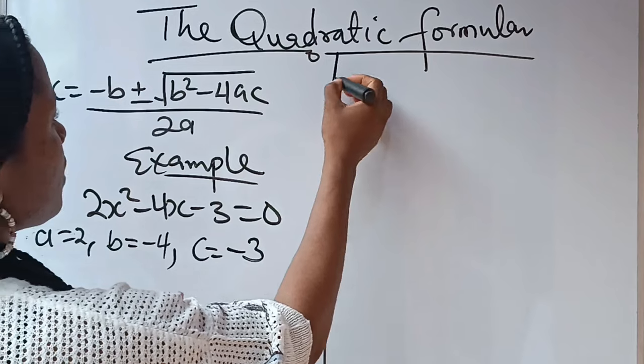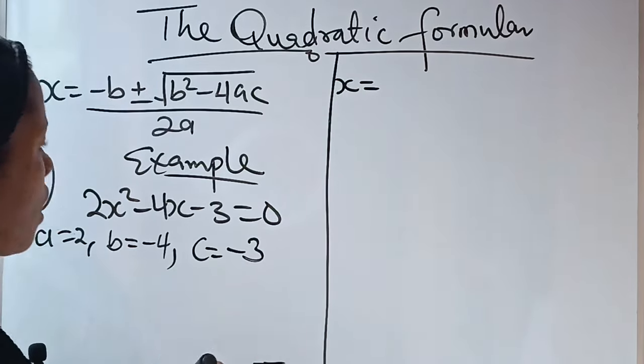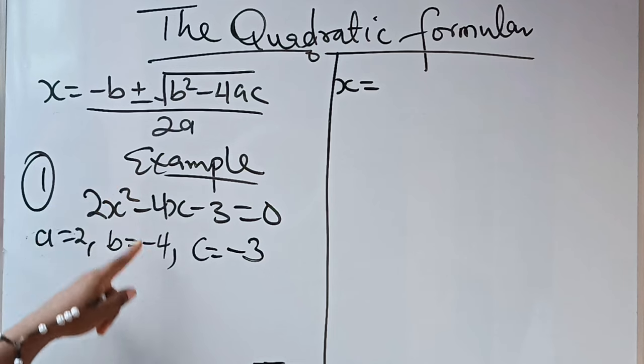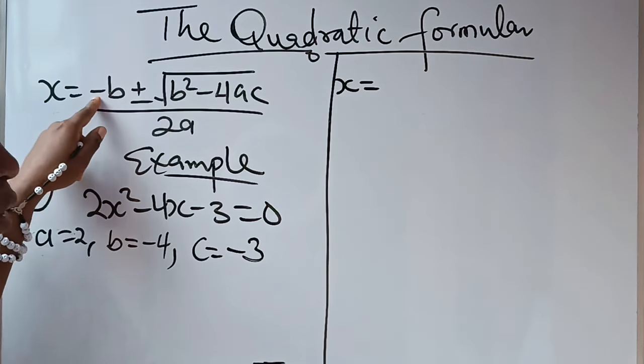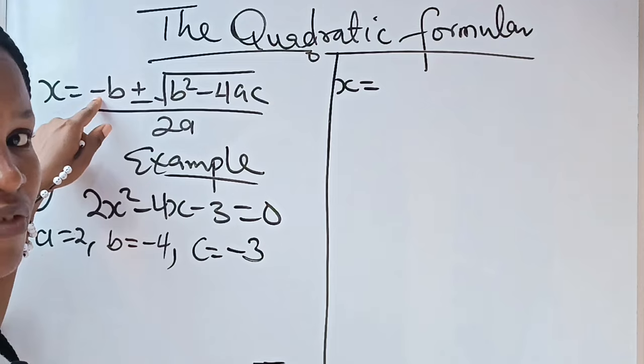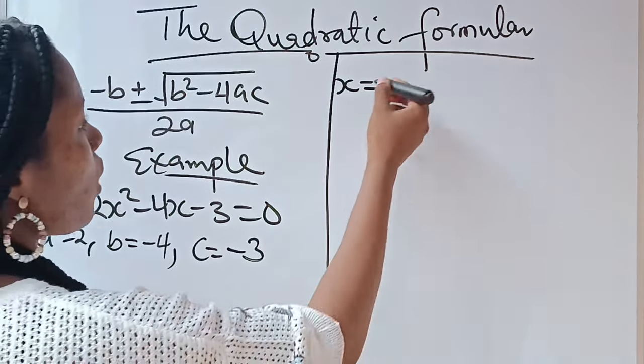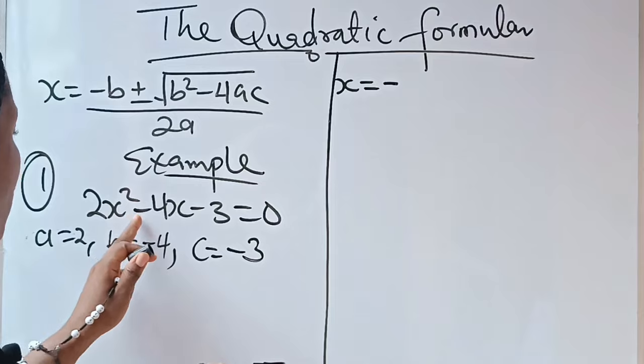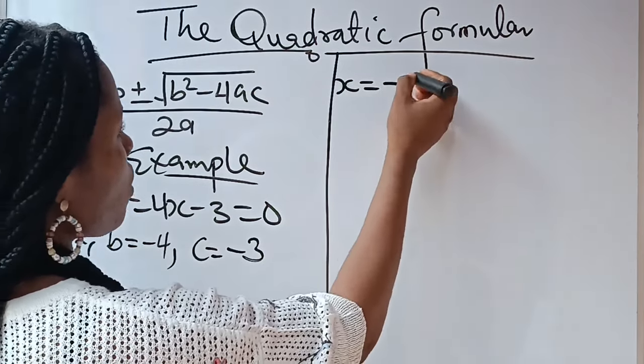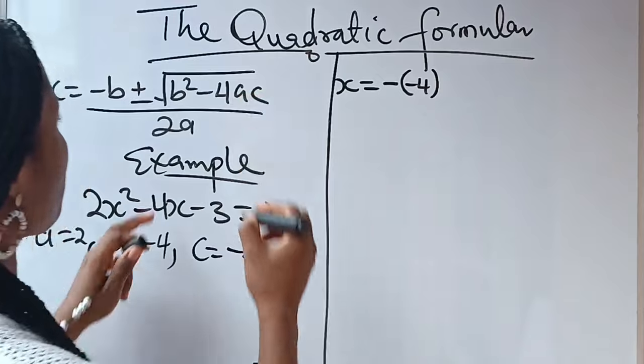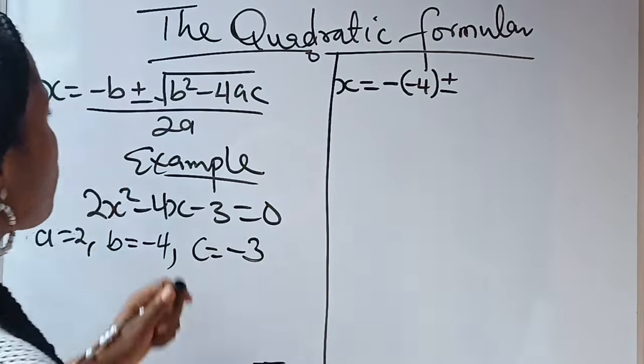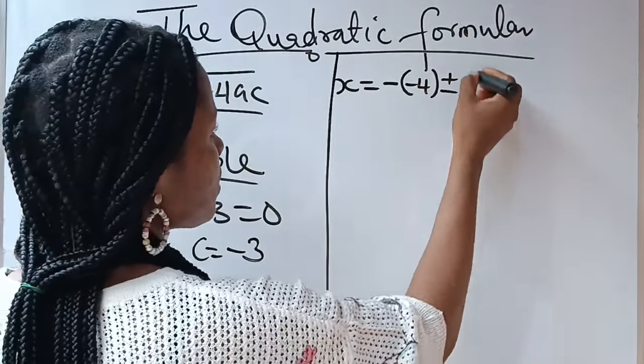Notice that we said that our x is equal to, now, what is our B? Our B is -4. So, there is -B originally in our formula. We are not going to throw it away. We are going to write that first before we write our -4. Now, plus or minus, square root of B²?